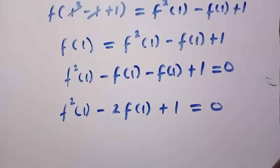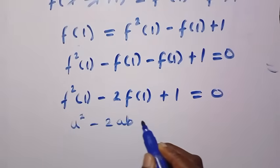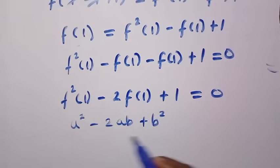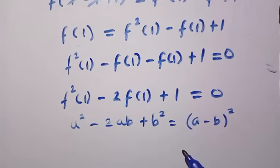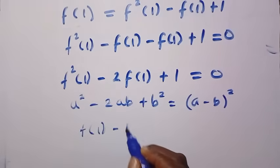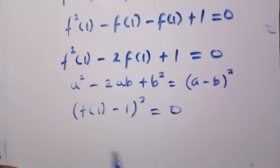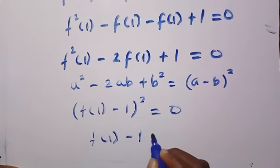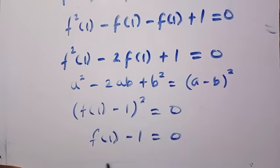If you compare this with a squared minus 2ab plus b squared, this is equivalent to a minus b raised to the power of 2. So this expression becomes f of 1 minus 1 all raised to the power of 2 equals 0. And if this equals 0, then we can conclude that f of 1 minus 1 equals 0. So therefore f of 1 equals 1.